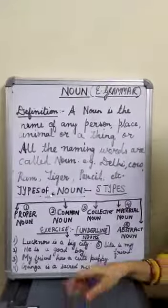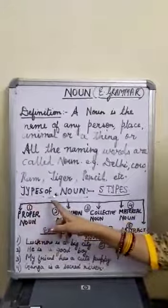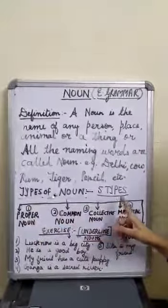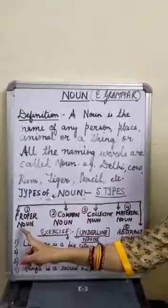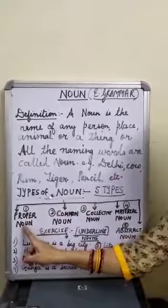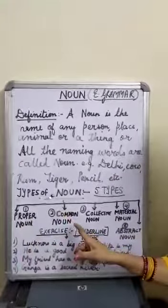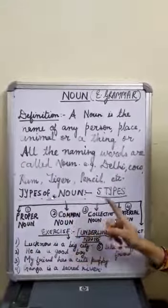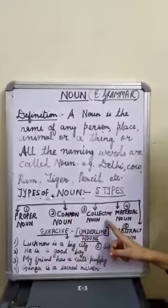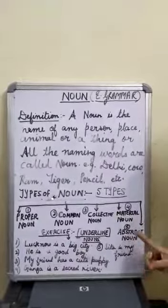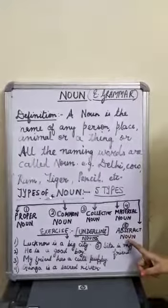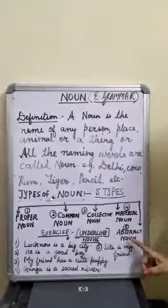Now, we can classify noun into five types: the proper noun, the common noun, the collective noun, the material noun, and the abstract noun.